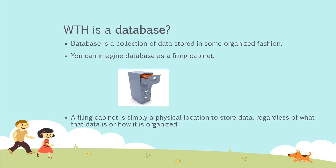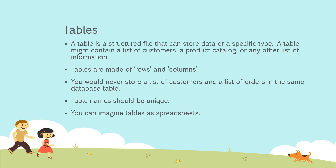Inside a database we have tables. A table is a structured file. When you store information in your filing cabinet, you don't just toss it in a drawer — you create files within the cabinet and file related data in those specific files. In the database world, that file is called a table. A table is a structured file that can store data of a specific type, such as a list of customers. Tables are made of rows and columns — you can imagine a table as an Excel spreadsheet with rows and columns.